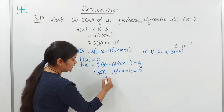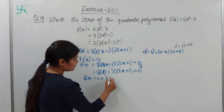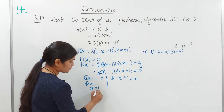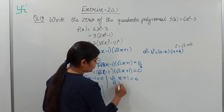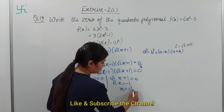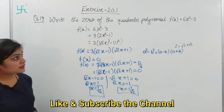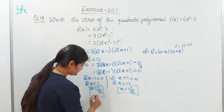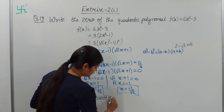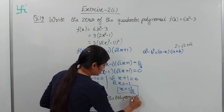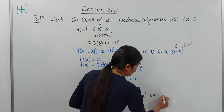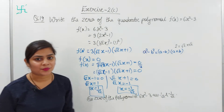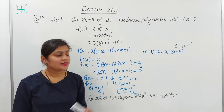Now we put each factor equal to zero individually. From root 2·x minus 1 = 0: root 2·x = 1, so x = 1/root 2. From root 2·x plus 1 = 0: root 2·x = minus 1, so x = minus 1/root 2. Since it is a quadratic with degree two, there are two zeros. Therefore, zeros of the polynomial 6x² minus 3 are 1/root 2 and minus 1/root 2.